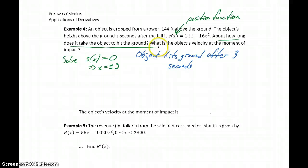The second part of our question asks us, what's the object's velocity at the moment of impact? What we need is a velocity function. Once we have this velocity function, we can evaluate it at three seconds to see exactly how fast our object was traveling. The velocity function is the same thing as the derivative of our position function.